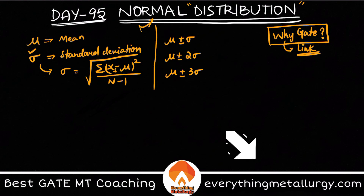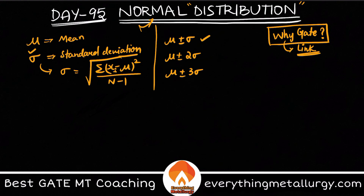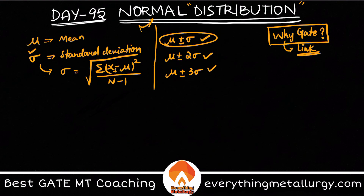In the first case, the tolerance is plus or minus sigma, meaning mu is the desired value and a deviation of plus or minus sigma is allowed. The question is: what percentage of data falls into this interval? Similarly, we ask the same for tolerances of 2 sigma and 3 sigma — this is what normal distribution explains.